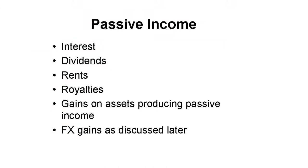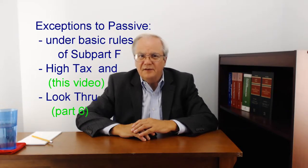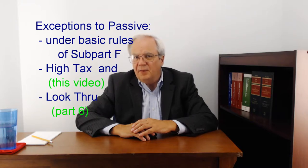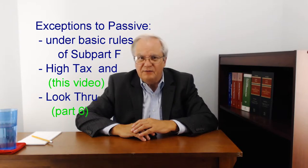Think of passive income as interest, dividends, rents, royalties, and gains on property producing such income. There are two very important exceptions to passive income that are not in the Subpart F definitions, but are in Section 904 or are different in Section 904.